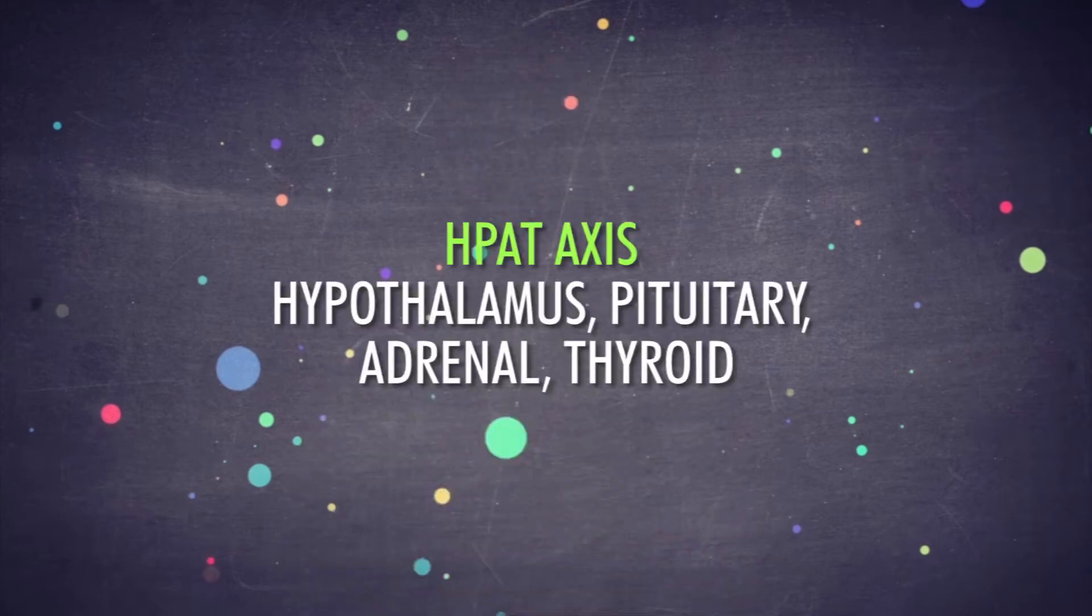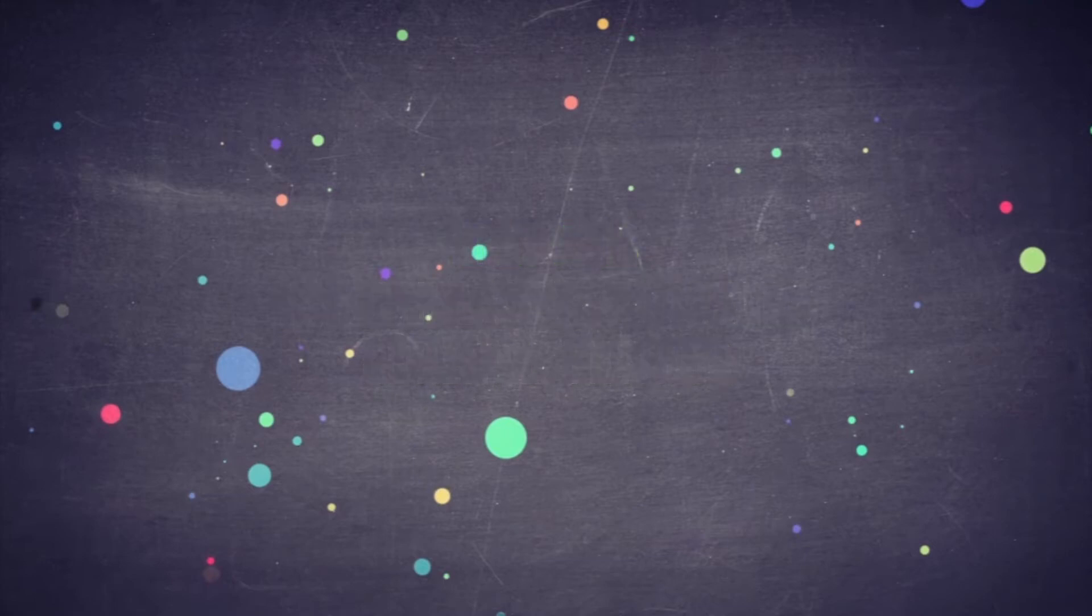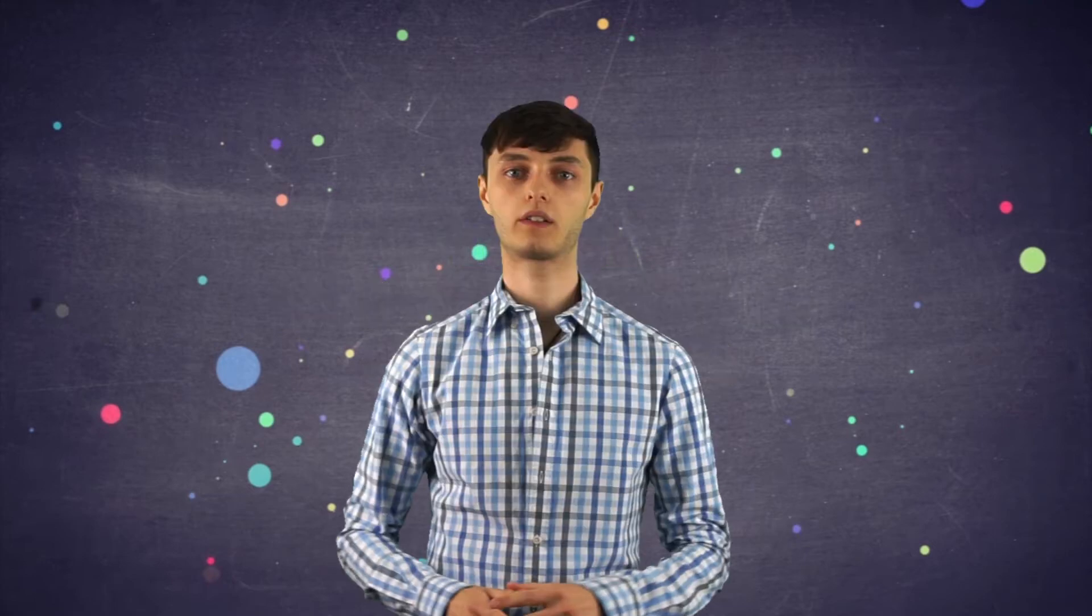Hypothalamus, pituitary, adrenal, thyroid axis. Pituitary cases. Some of these pituitary cases are often seen as growth abnormalities in the body, such as scoliosis and other forms of misplaced body structure. This is usually managed by focusing on diet, pituitary, thyroid, adrenals, and chiropractic care.